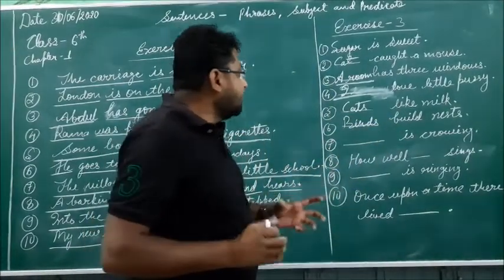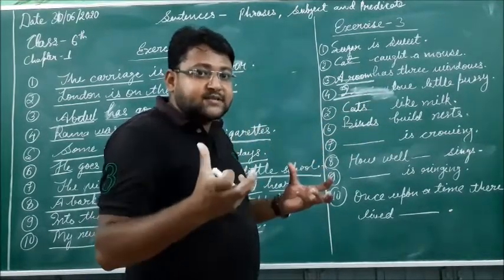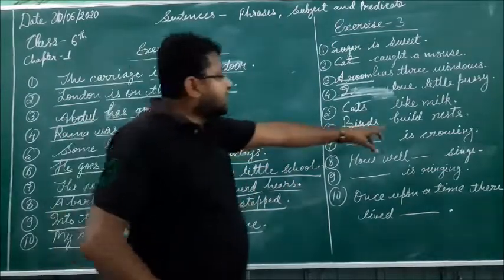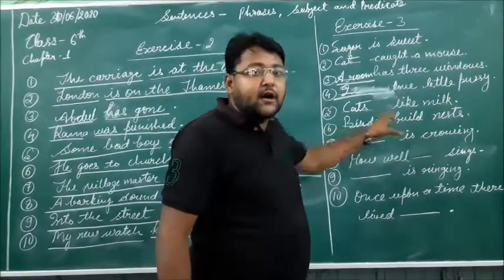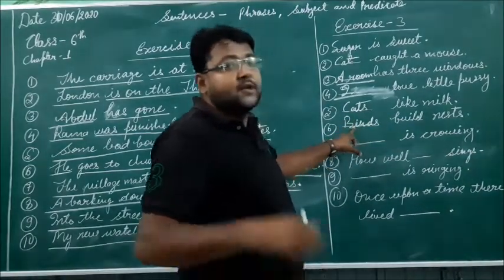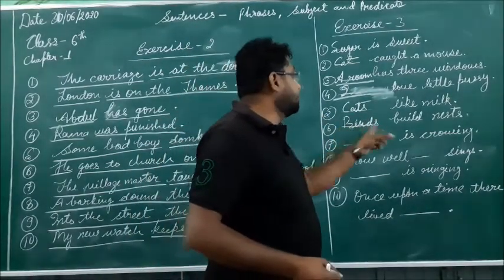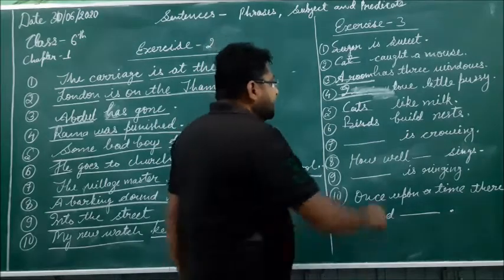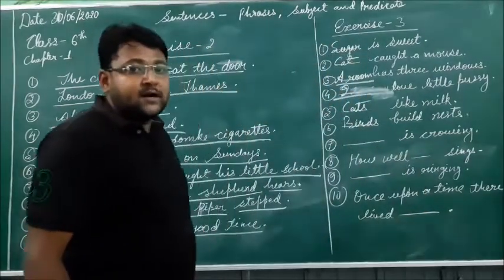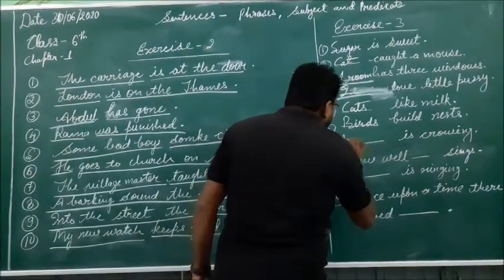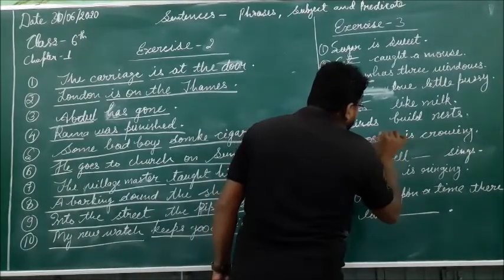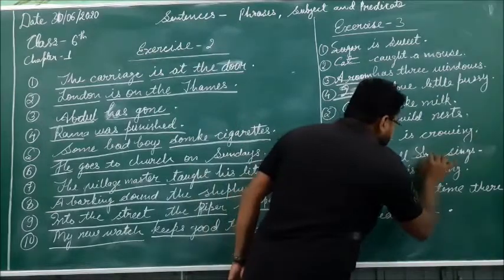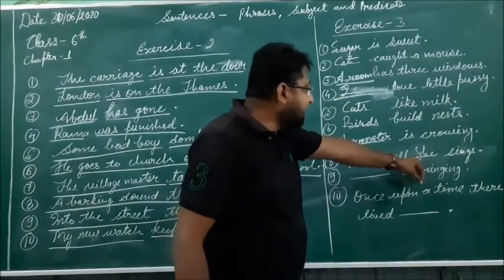One more thing to keep in mind: if the subject is singular, the verb is singular; if the verb is plural, you have to put the subject plural. So according to the verb, you have to put the appropriate subject. 'Dash is crowing' — who is crowing? 'A rooster is crowing.' 'How well dash sings' — 'How well she sings.' Here the verb is singular, that's why we apply a singular subject.